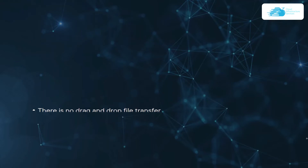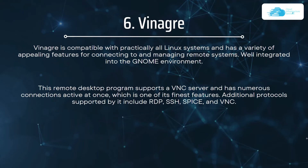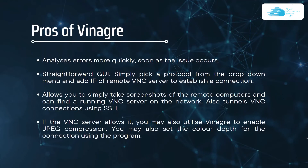Number six on our list is Vinagre. Vinagre is compatible with practically all Linux systems, has a variety of appealing features for connecting to and managing remote systems, and is well integrated into the GNOME environment. It supports a VNC server and can have numerous connections active at once. Additional protocols supported include RDP, SSH, SPICE, and VNC. Its pros include faster error analysis, a straightforward GUI, the ability to take screenshots of remote computers, and support for finding a running VNC server on the network.